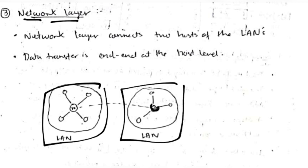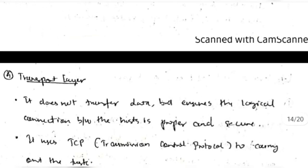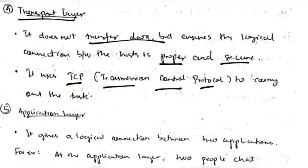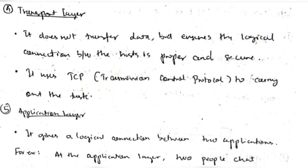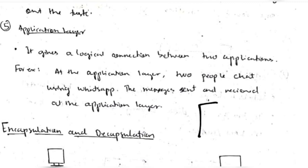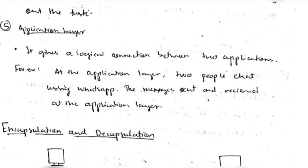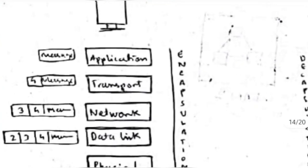The network layer is larger in scope than the data link layer; it connects data directly between hosts across LANs or WANs. The transport layer does not transfer data directly but ensures proper carrying and security of data, governed by TCP (Transmission Control Protocol). The application layer is the highest level — what the user interacts with, such as sending WhatsApp messages without worrying about the underlying transfer mechanism.